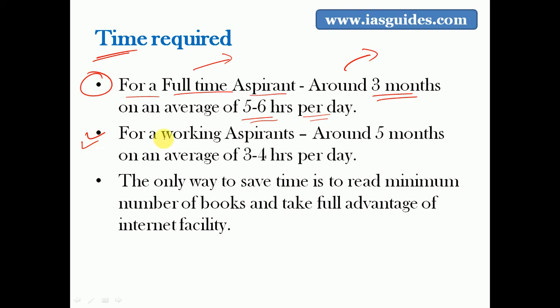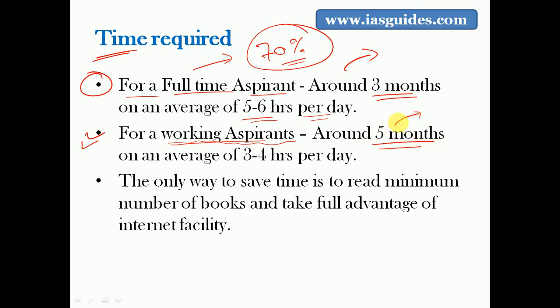About 70 percent of civil service aspirants are working while preparing. For working aspirants, a little more time is required - around five months, if you study around four hours per day consistently. In five months you can cover 100 percent of the sociology syllabus, but the key point is consistency - you have to read regularly.